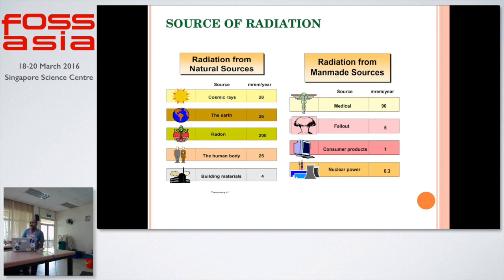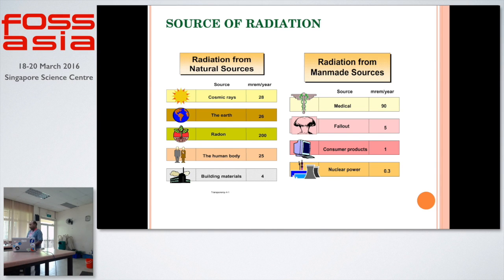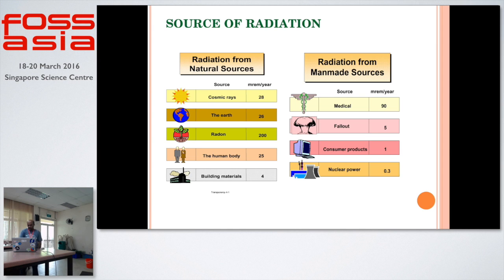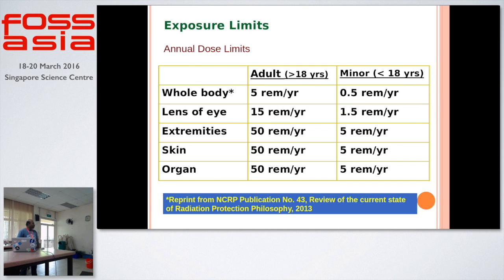These are the sources from where we are getting radiation and which we use for our technology. Most of the radiations are coming from cosmic rays, and these cosmic rays are considered to come from the sun. If the sun takes a holiday, no technology will be there. It is a grace of the sun that we are having radiations and using technology.